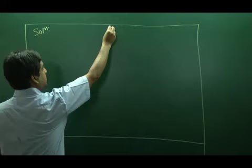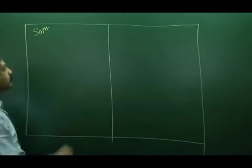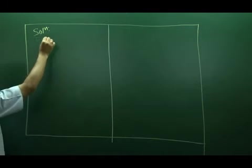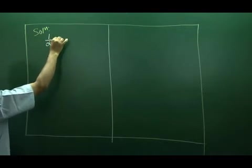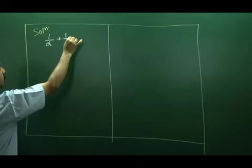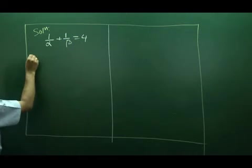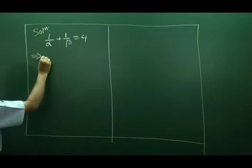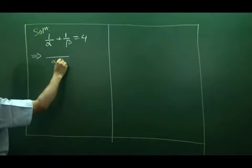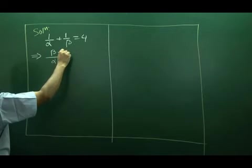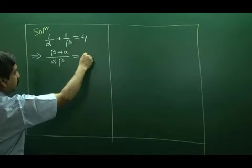To solve the question, we proceed with 1 by alpha plus 1 by beta is equal to 4, which implies beta plus alpha over alpha beta is equal to 4.